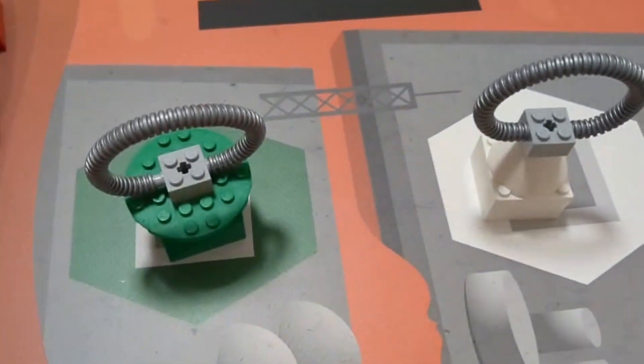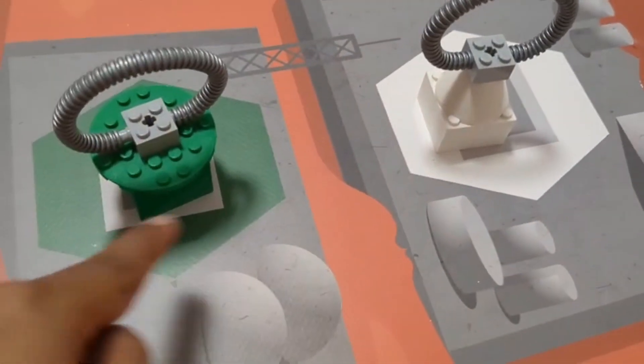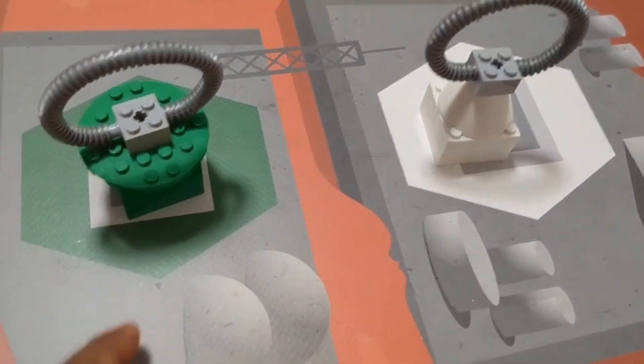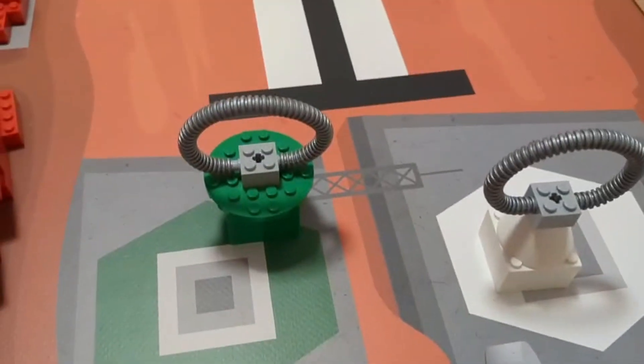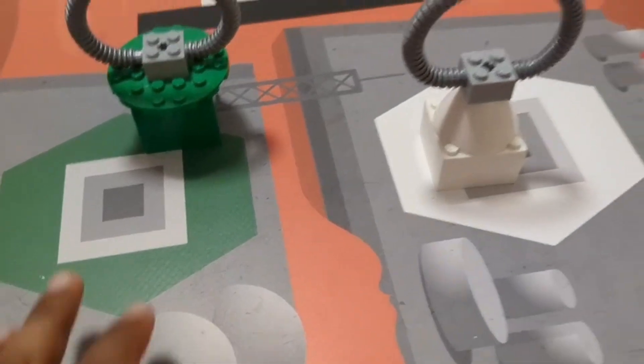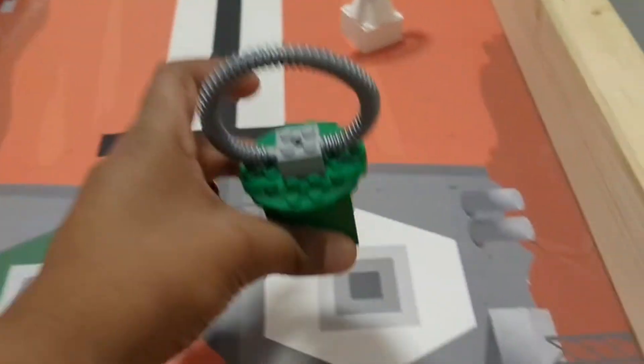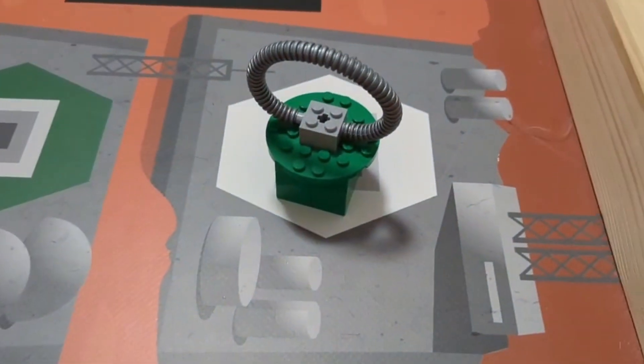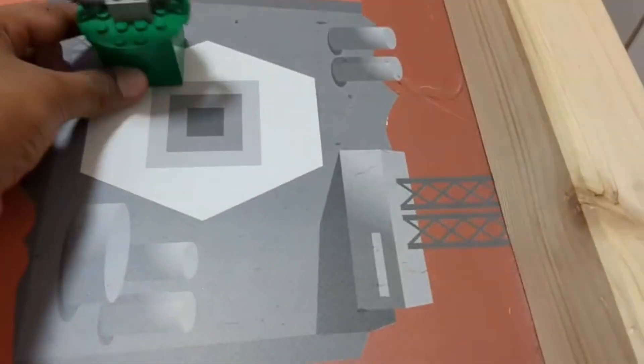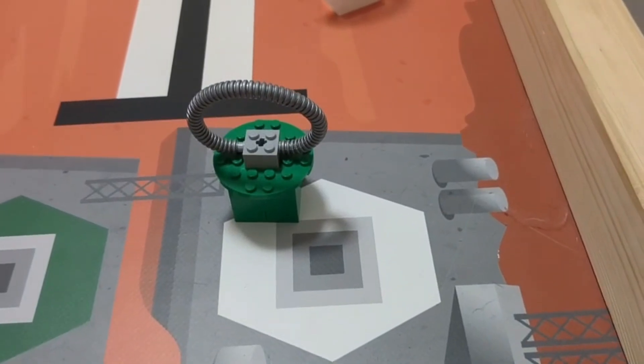You get 15 points for it being in its correct color area and completely inside. 10 points for being half inside in the correct area, and zero points if it's not touching at all. If the block is in the wrong color, you get 10 points. And if it's just touching, that is also 10 points.